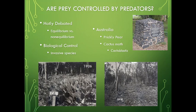Without the predator, the prickly pear cactus went crazy — there was nothing controlling it. When the predator was added, it did a good job. To this day, prickly pear still exists in Australia but in relatively low numbers. It's kind of a cat-and-mouse game: a small patch of prickly pear will pop up somewhere, and then the moth will find it a year or two later and wipe it out, then a new patch appears somewhere else.